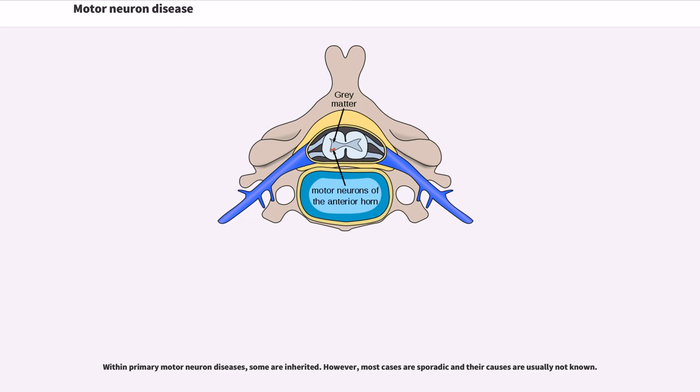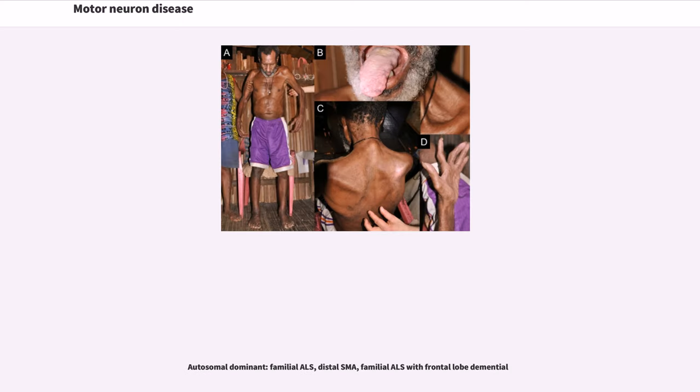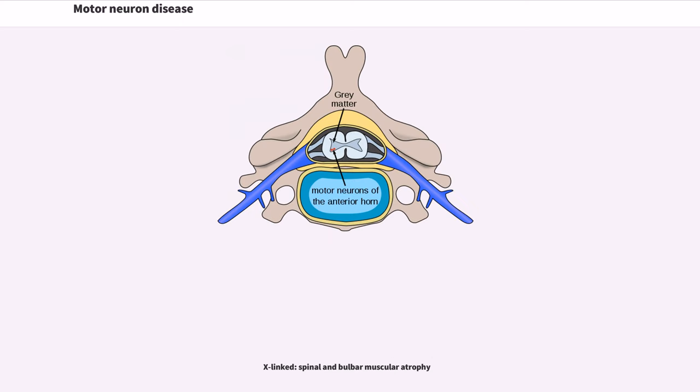However, most cases are sporadic and their causes are usually not known. Autosomal recessive: SMA, PBP, Juvenile Onset ALS, Brown-Vialetto-Van Laere Syndrome. Autosomal Dominant: Familial ALS, Distal SMA, Familial ALS with Frontal Lobe Dementia. X-Linked: Spinal and Bulbar Muscular Atrophy.